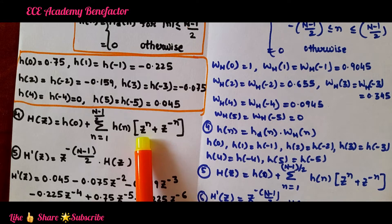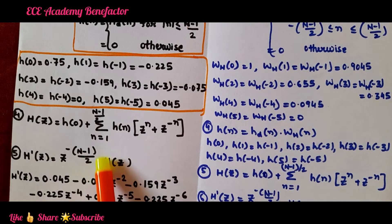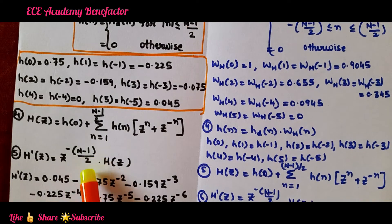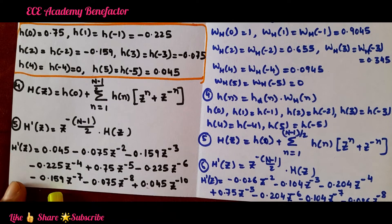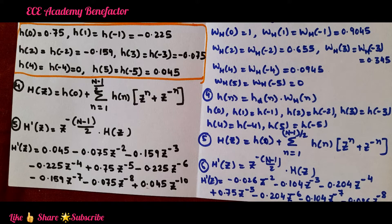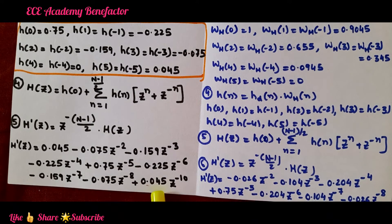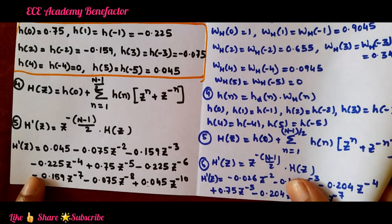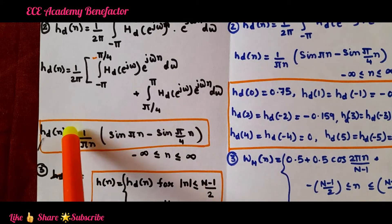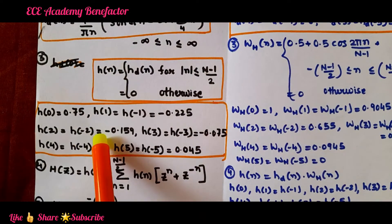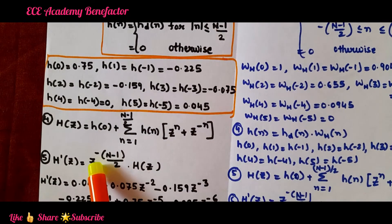Since H(z) contains positive powers of z, it is not physically realizable. To make it physically realizable, the transfer function is multiplied by z^{-(N-1)/2}. On simplifying, H'(z) comes to be: 0.045 - 0.75z^{-2} - 0.159z^{-3} - 0.225z^{-4} + 0.75z^{-5} + 0.225z^{-6} - 0.159z^{-7} - 0.075z^{-8} + 0.45z^{-10}. This completes the Fourier series method.